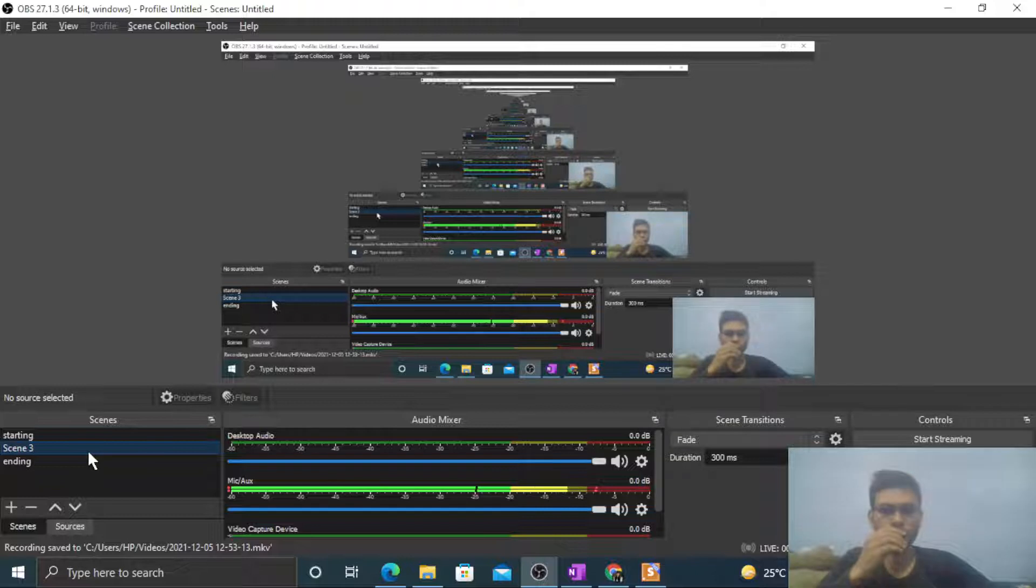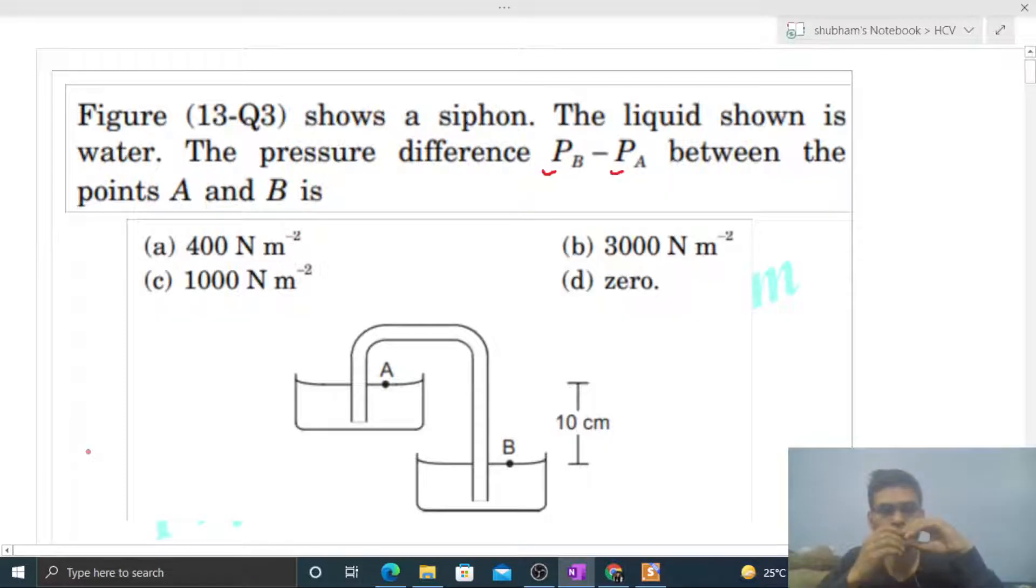Okay hi everyone, so today let's discuss one interesting problem. It says a figure shows a siphon, the liquid shown is water. The pressure difference Pb minus Pa between points A and B is - fine, so this time we